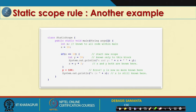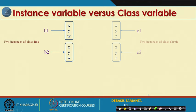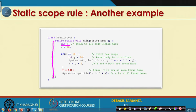That is one example of static scope rule. Now let us see another example. In a class named StaticScope, we declare one variable X as integer with value 20. Since it is declared within the main method, this X has scope of the entire main method.